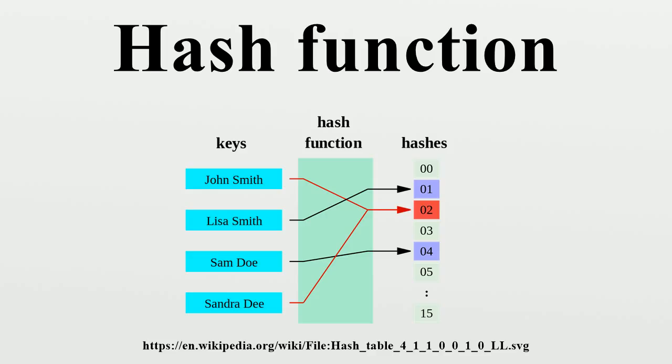Hash tables. Hash functions are primarily used in hash tables to quickly locate a data record given its search key. Specifically, the hash function is used to map the search key to an index. The index gives the place in the hash table where the corresponding record should be stored.